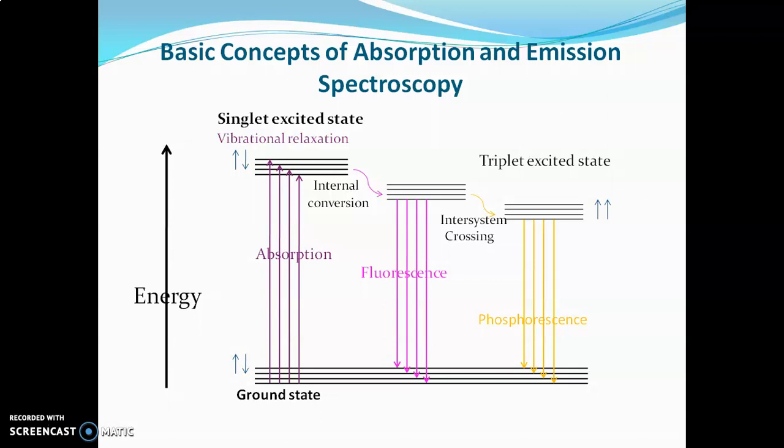The first phenomenon is the basis of UV-visible spectroscopy. The second two phenomena — fluorescence and phosphorescence — are called emission spectroscopy.